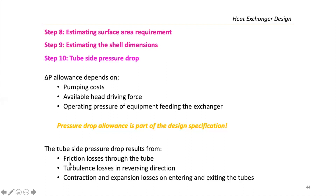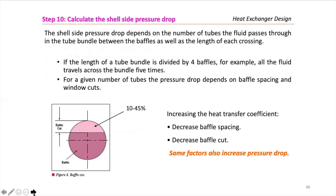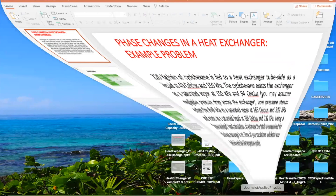The tube-side pressure drop results from friction losses through the tube, turbulence losses in reversing direction, and contraction and expansion losses entering and exiting the tubes. The shell-side pressure drop is equally important — when you are asked to design a heat exchanger, you are given the allowable pressure drop for both the tube side and the shell side, and you must accomplish both. The shell-side pressure drop depends on the number of tubes the fluid passes through between baffles and the length of each crossing. Decreasing baffle spacing or baffle cut can increase heat transfer but also increases pressure drop — there is a trade-off.